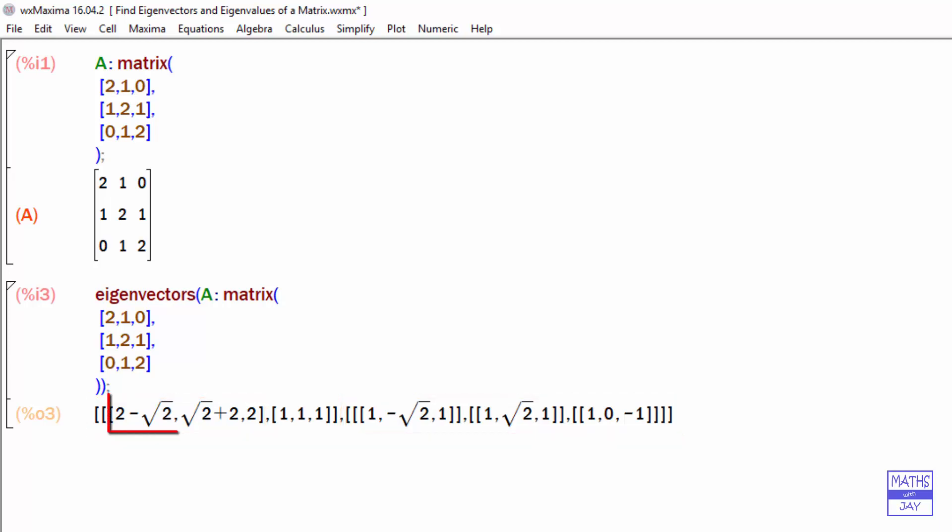So first of all, we've got the eigenvalue 2 minus root 2 is one of those, and that corresponds to the eigenvector 1 minus root 2, 1.